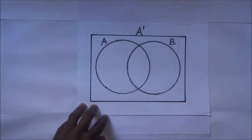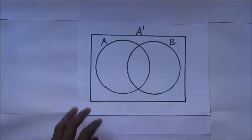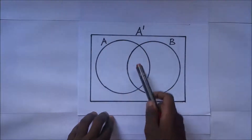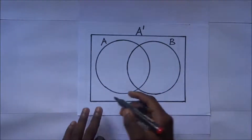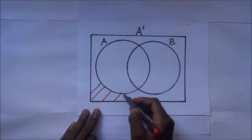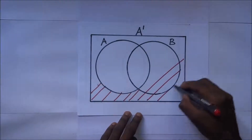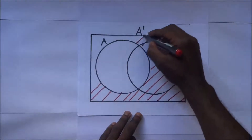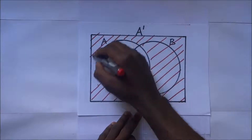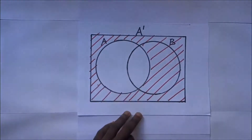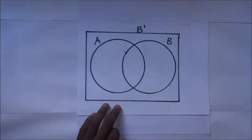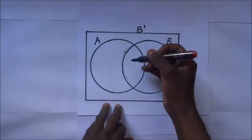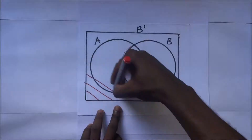Let's investigate what set A complement is. Set A complement is what is outside A — that is what it means. So set A complement means you do not shade A, but shade everything that is outside set A. Set B complement means you shade everything outside set B — you leave B without shading it.